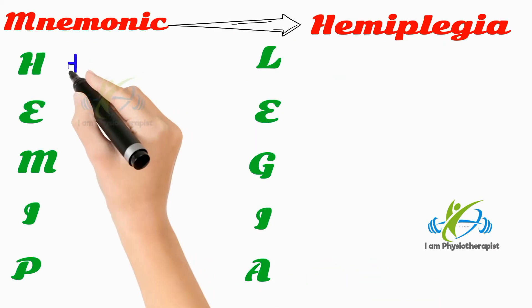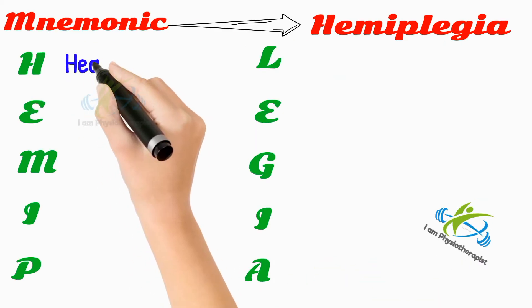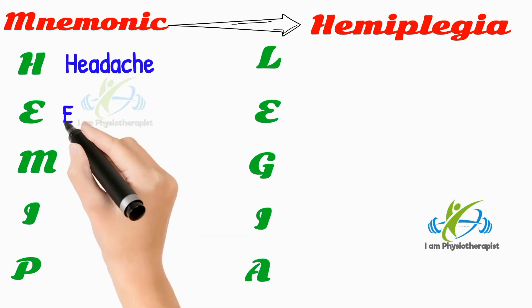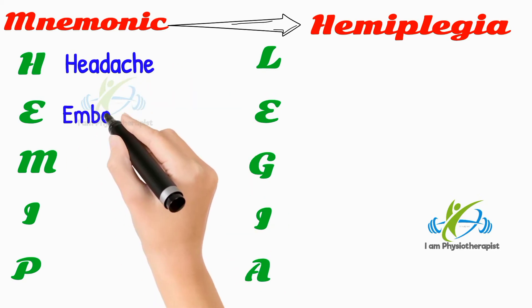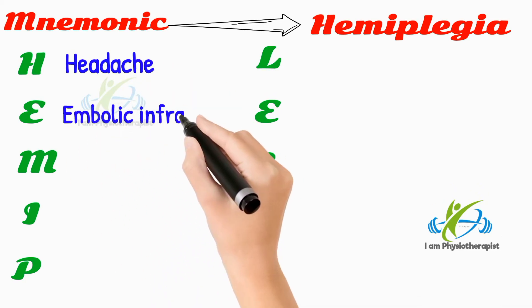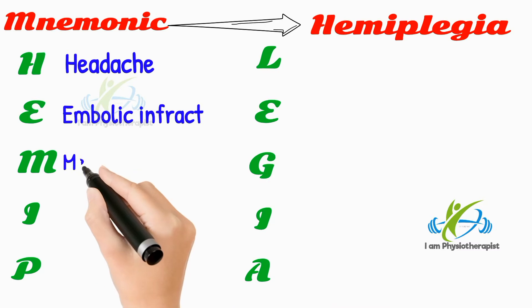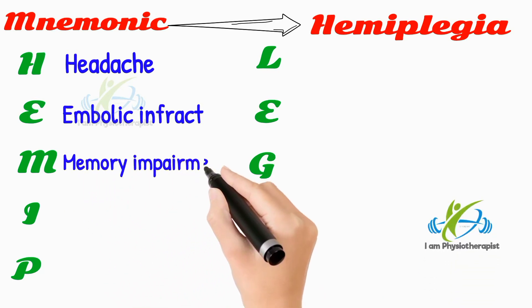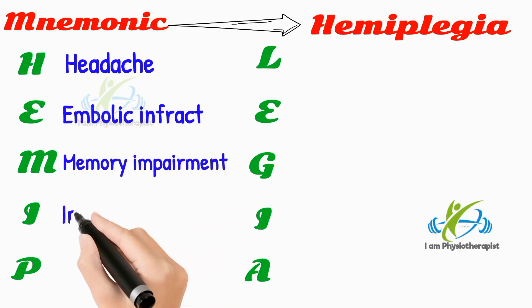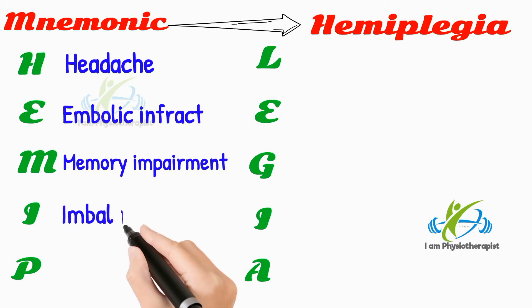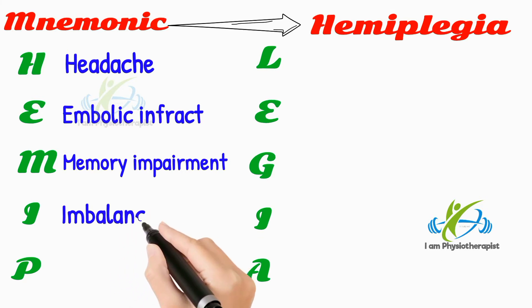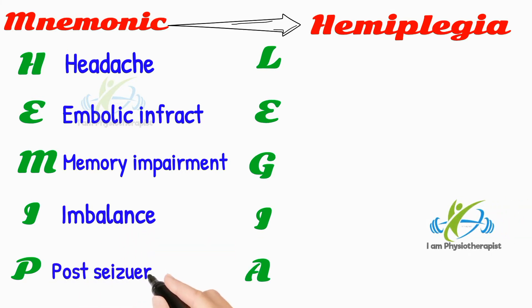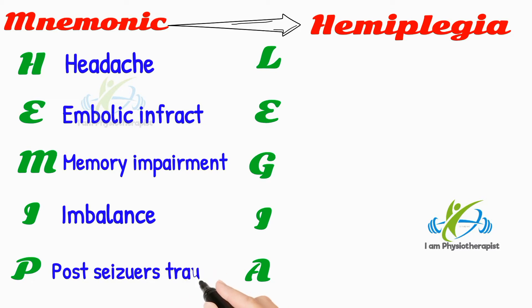H stands for headache. A stands for embolic or thrombotic infarct. M stands for memory impairment. I stands for imbalance or poor motor skills. P stands for post-seizure trauma.